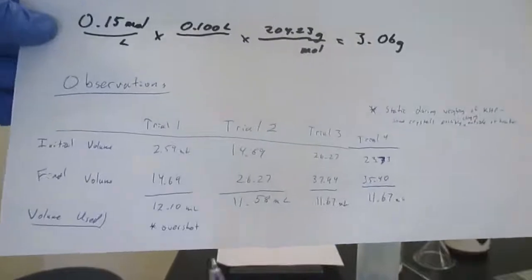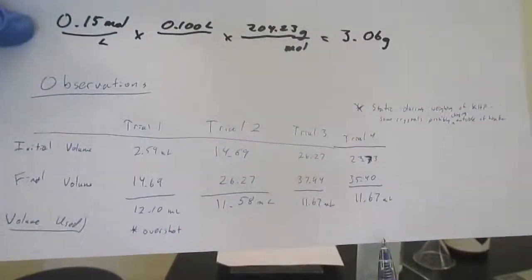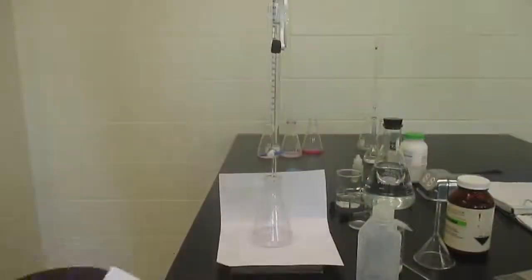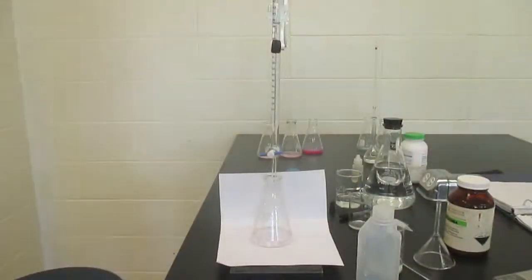So, that means we have these three, trials two, three, and four, are all within 0.1 mills. So, we are good to use those three as our average.